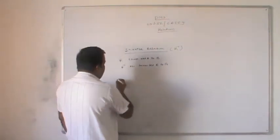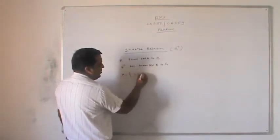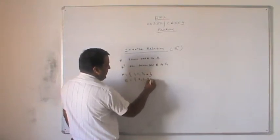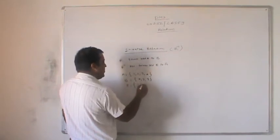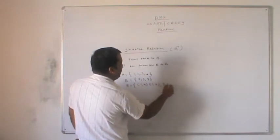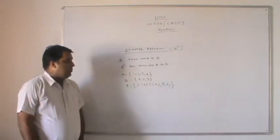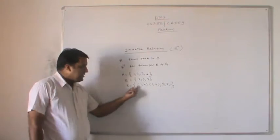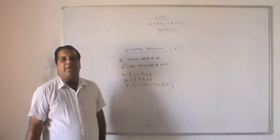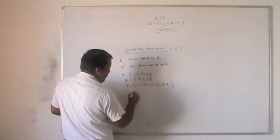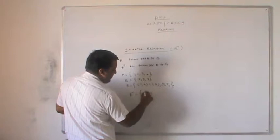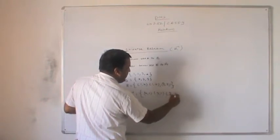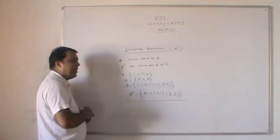For example, take A equal to {1, 2, 3, 4} and B equal to {x, y, z}. The relation R is {(1, x), (1, y), (3, z)}. The domain is the first element and the range is the second. R inverse is found by reversing the order: R inverse equals {(x, 1), (y, 1), (z, 3)}.